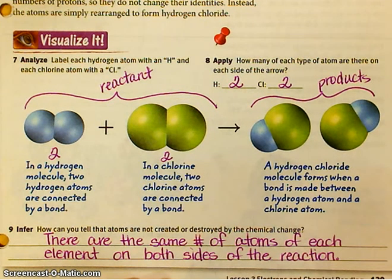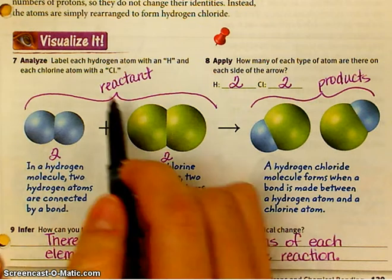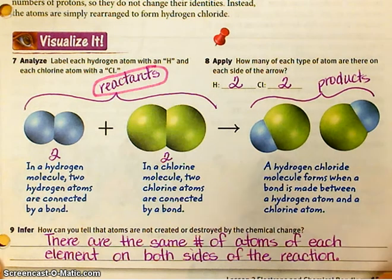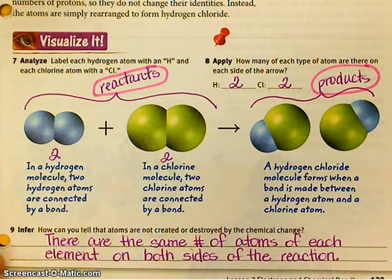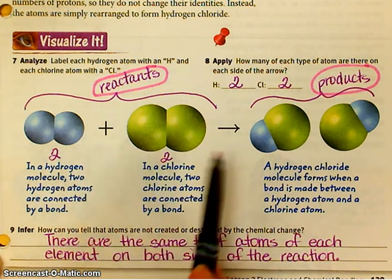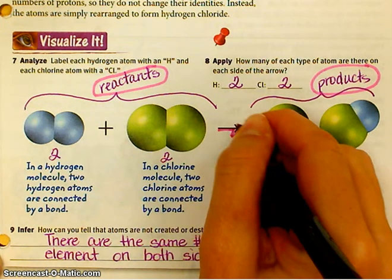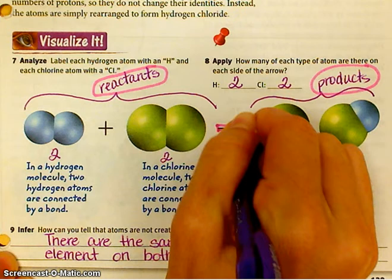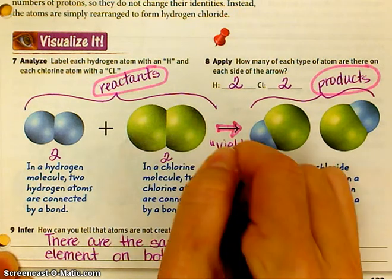What we start out with are reactants — reactants are what we begin a reaction with. Products are what we get at the end of the reaction. It's going to look a lot like a math equation: this substance plus this substance reacting together is going to yield or produce a new substance or substances. This arrow right here means 'yields' or 'produces'.